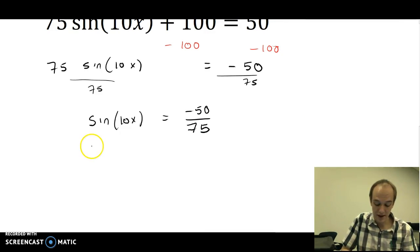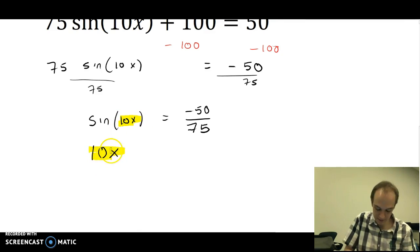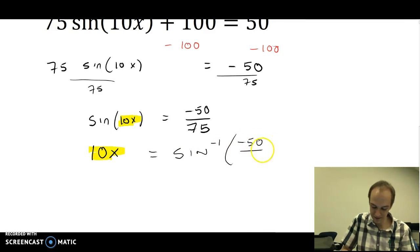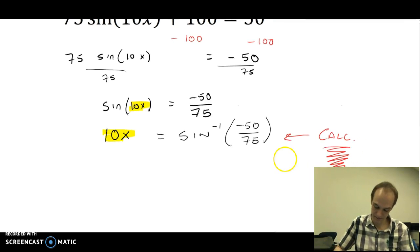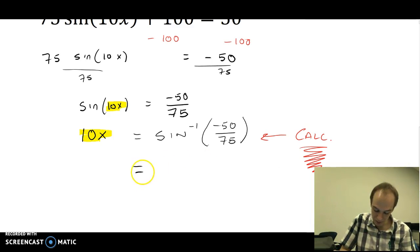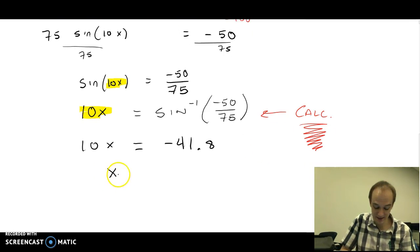And you get sine of 10x equals negative 50 over 75. Then you're going to do inverse sine. So if you have an equation like this, it can be solved in this way. 10x, the thing inside equals sine inverse of negative 50 divided by 75. This is something you can push into your calculator. And when you do, you end up with 10x is equal to negative 41.8.